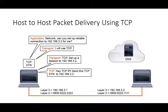The transport layer instructs TCP to set up a session to 192.168.3.2. You might wonder how the machine and application know that address. That's where DNS comes into play. If we are sending an email, we plug in a fully qualified domain name — something like mail.something.com — and DNS resolves that name, pointing us to 192.168.3.2. DNS is just a separate application handling that resolution.